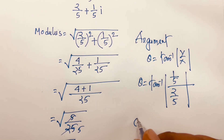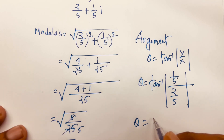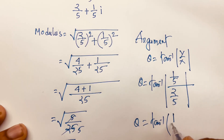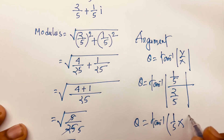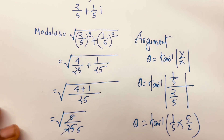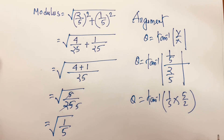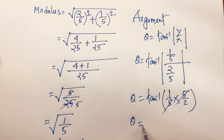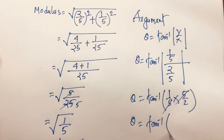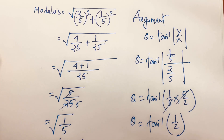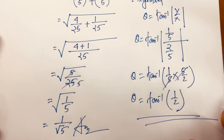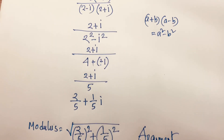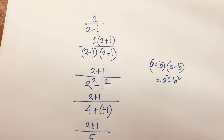Simplifying, (1 over 5) times (5 over 2) — the 5s cancel — so theta equals tan inverse of 1 over 2. This is our final answer for the argument. Thank you all; if you enjoyed this video please subscribe to my channel and like this video. Goodbye!